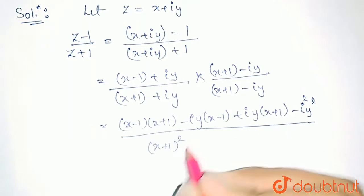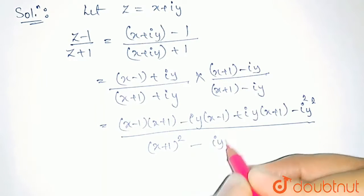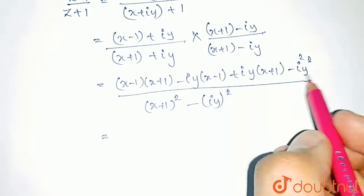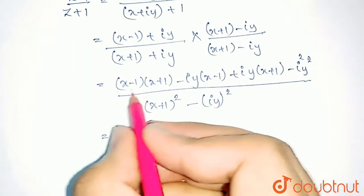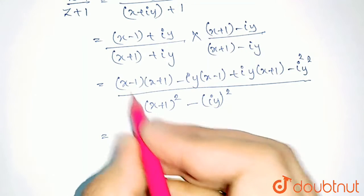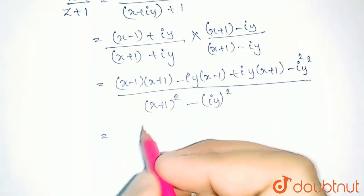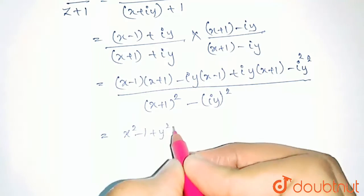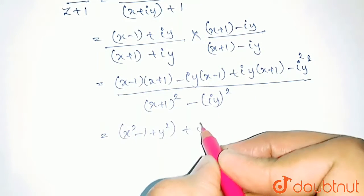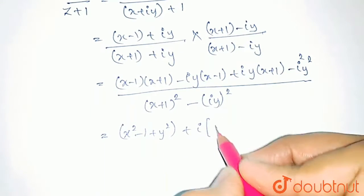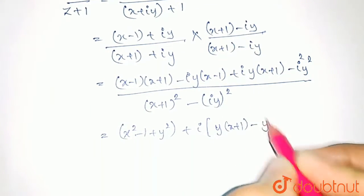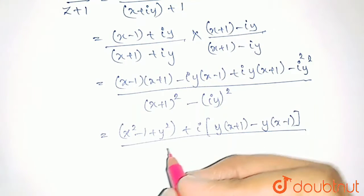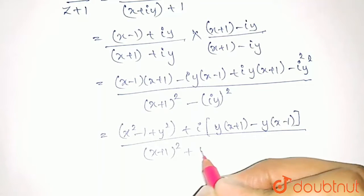So a squared is (x plus 1) whole square minus b squared where b is iota y, so minus (iota y) whole square. Since iota squared is minus 1, the denominator becomes (x plus 1) whole square plus y squared. The numerator gives us the real part as (x squared minus 1 plus y squared), and the imaginary part as y(x plus 1) minus y(x minus 1).